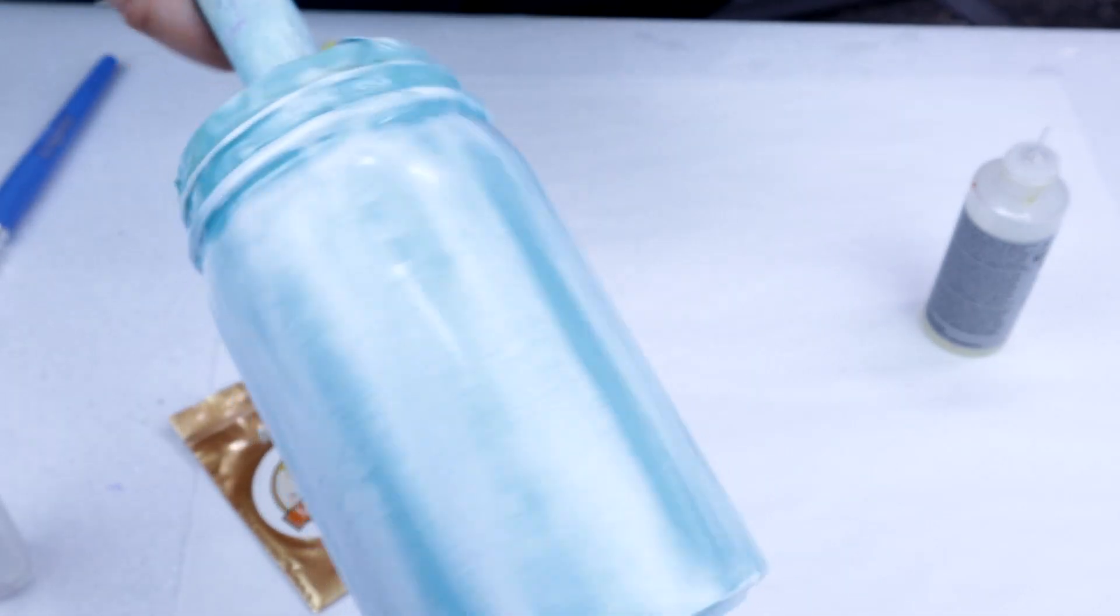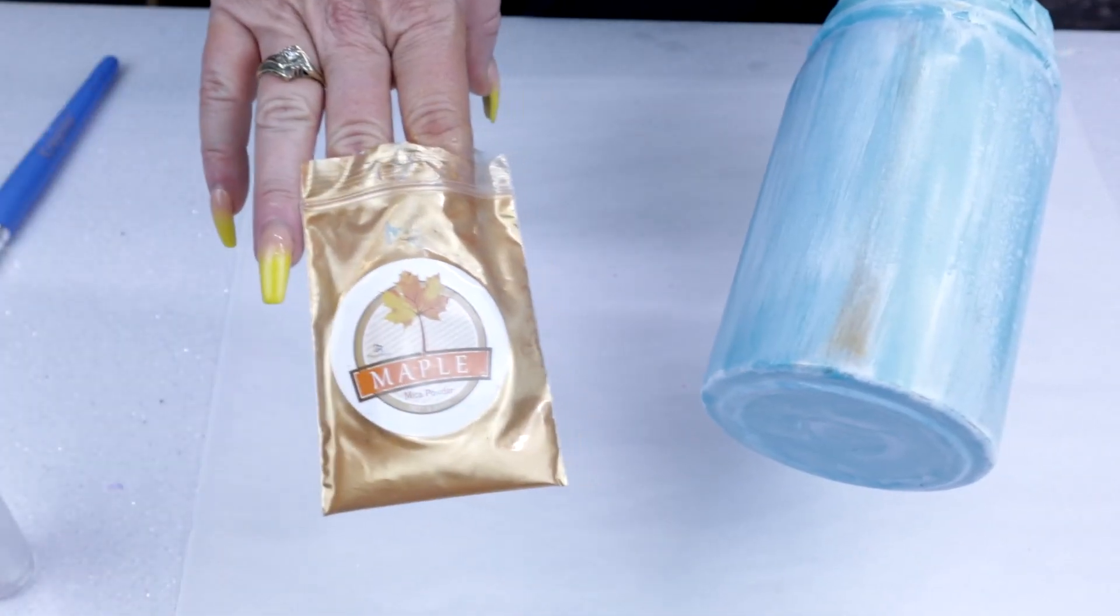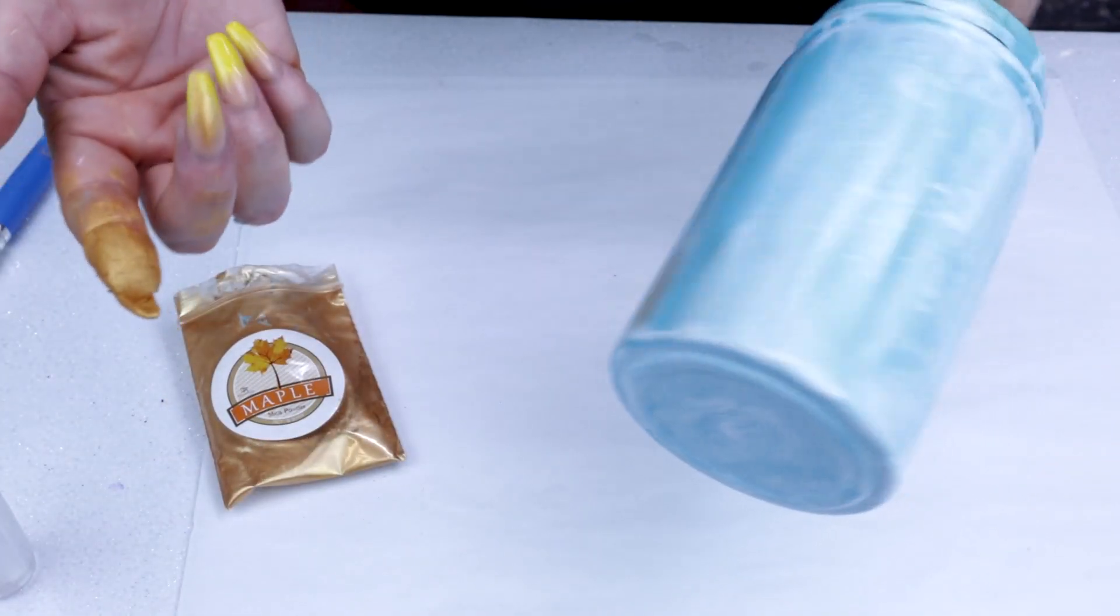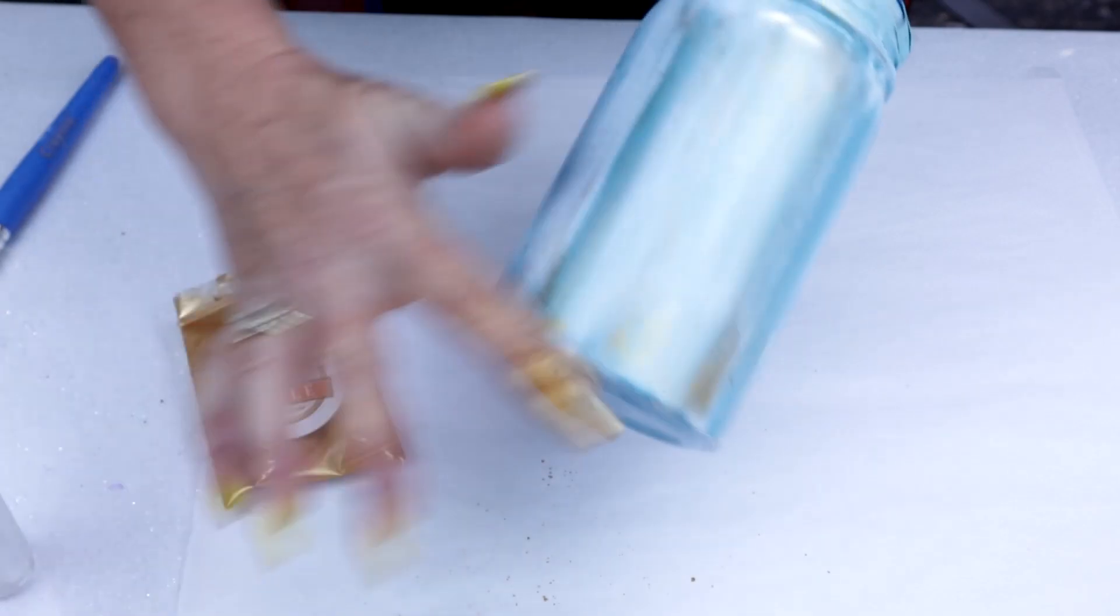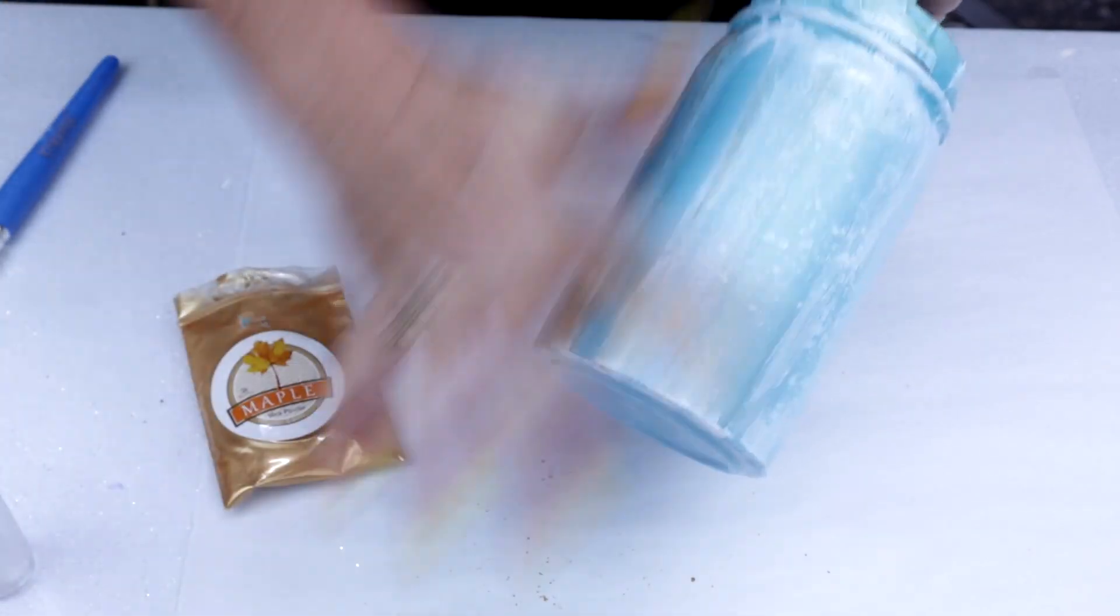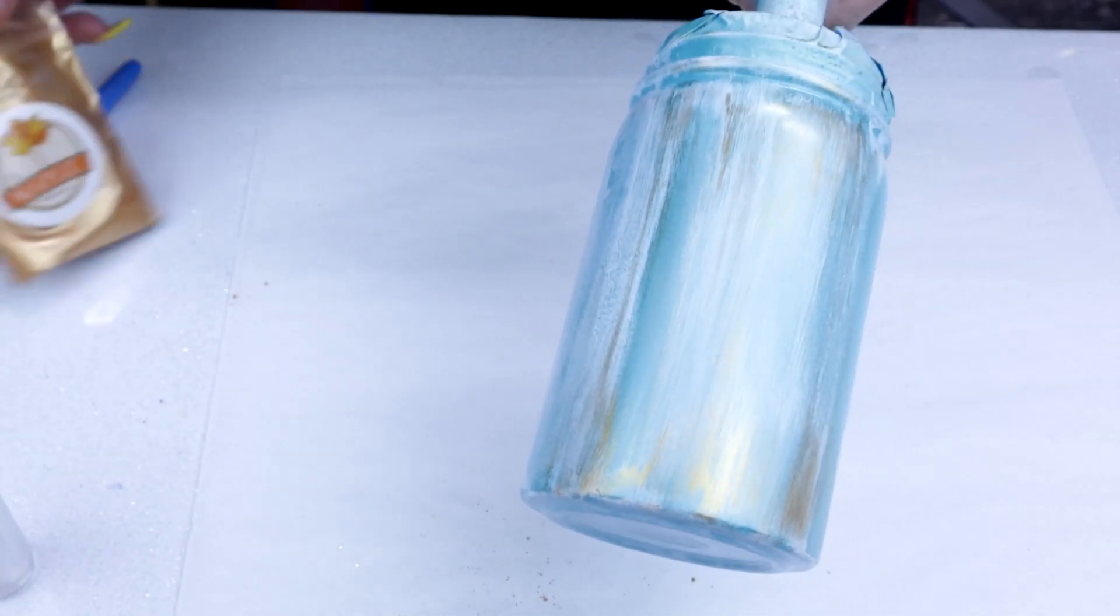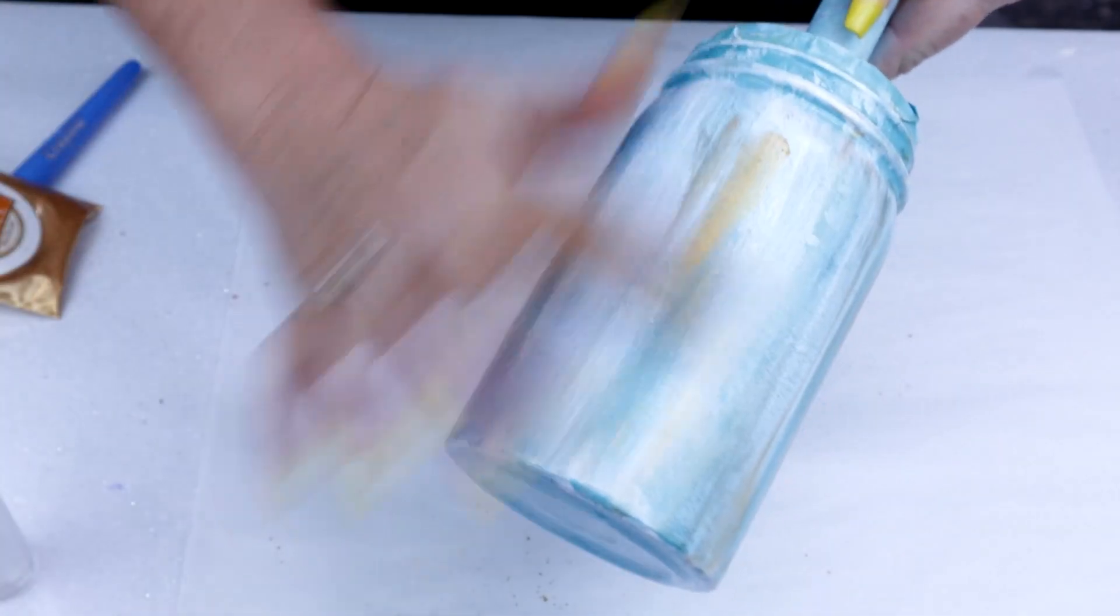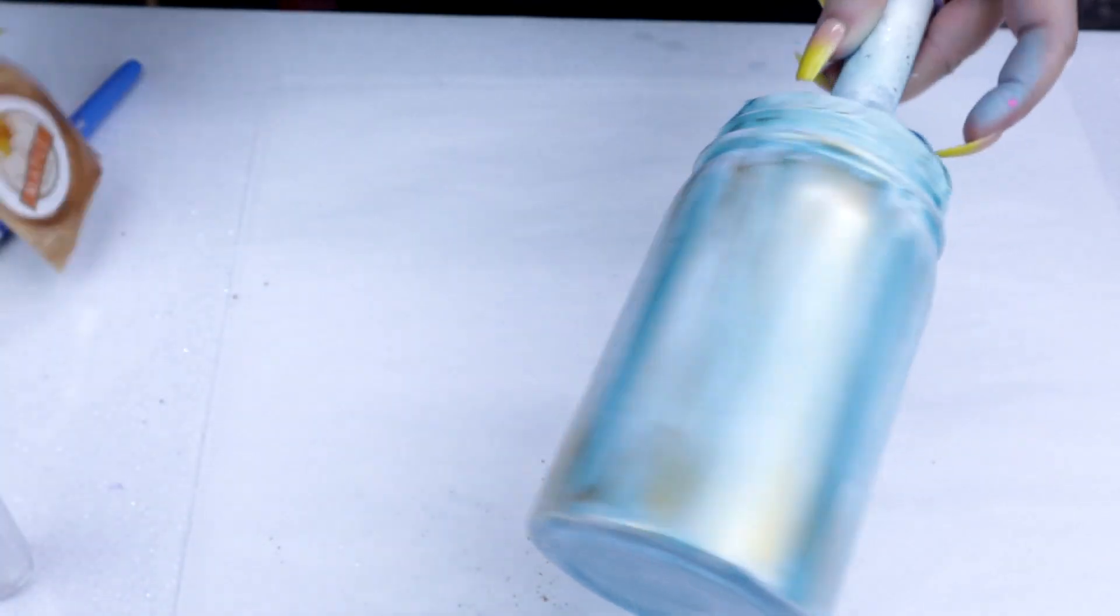I already got a head start using the Maple from the mica powder collection. I'm just using my fingers, dipping my finger in there and then just finding a section and rubbing it in. Again, you can do more or less depending on your preference. Definitely giving it a little bit of a rustic, dirty feel. Just go all the way around.